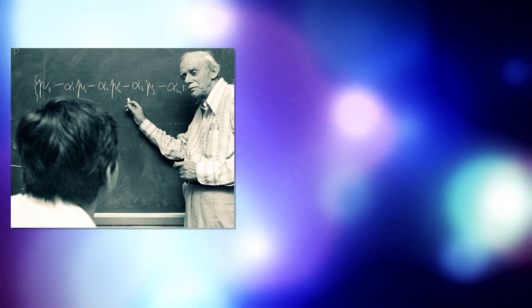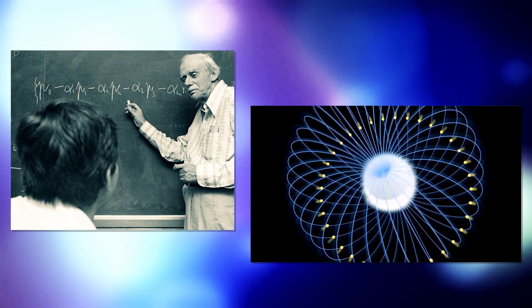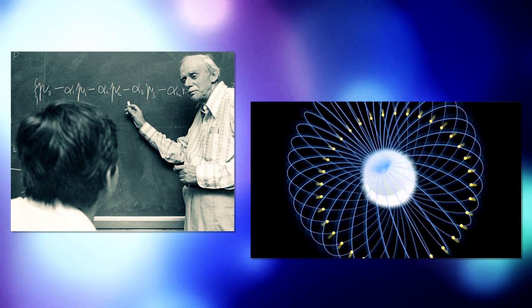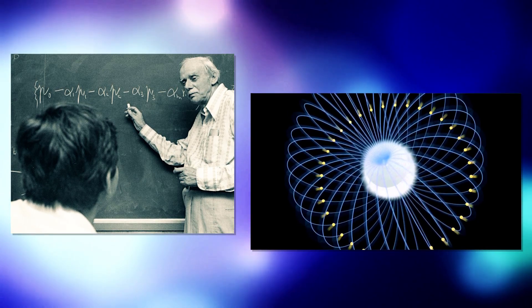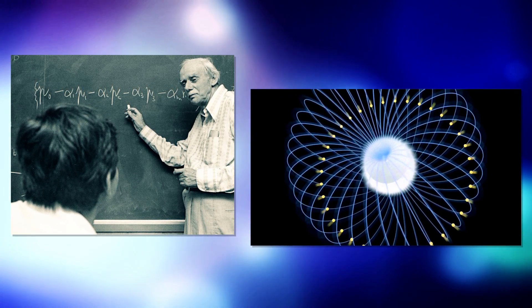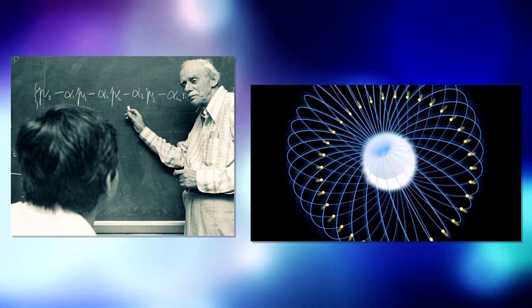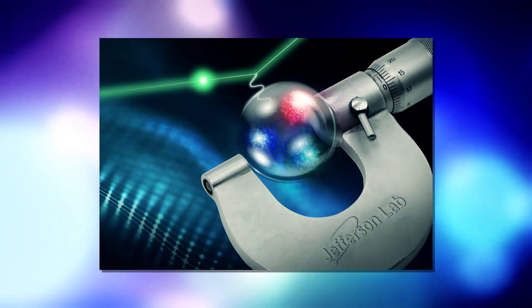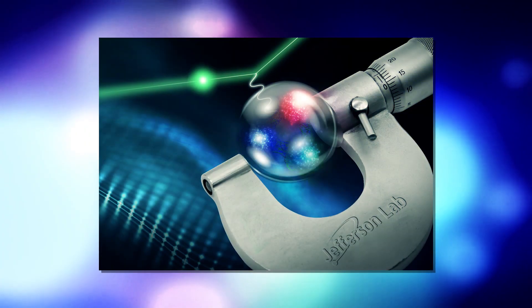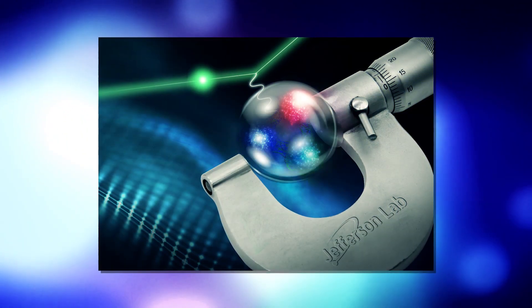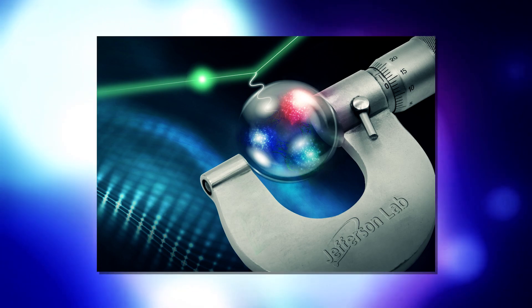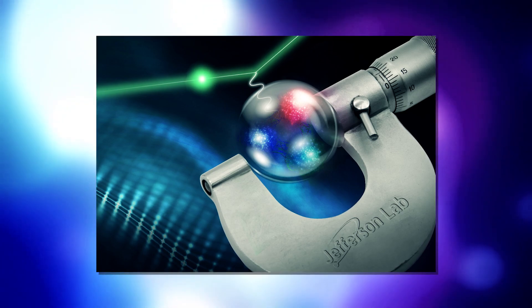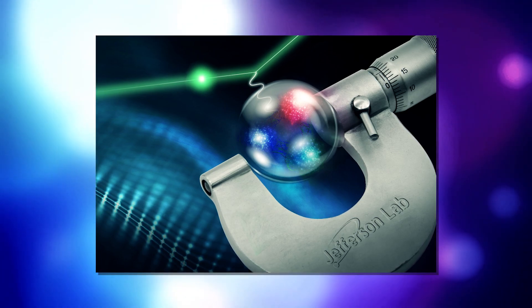According to QED, the electromagnetic force between two particles arises as the result of the exchange of one or more photons. The theory is so successful that it describes the magnetic properties of particles such as the electron to an accuracy of about one part in a billion.